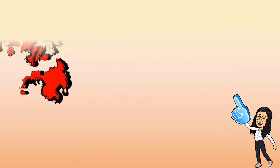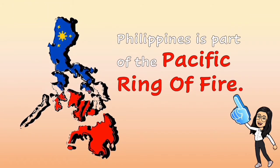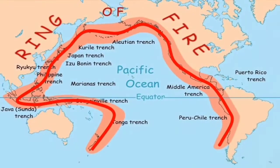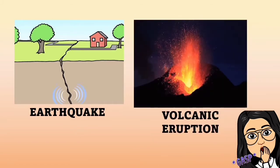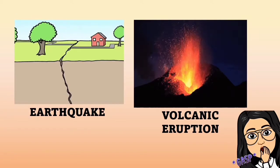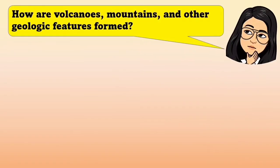You have learned from your past science lessons that the Philippines is part of the Pacific Ring of Fire. This means that our country and other places located at the Ring of Fire experience earthquakes, volcanic eruptions, and other tectonic activities. How are volcanoes, mountains, and other geologic features formed?